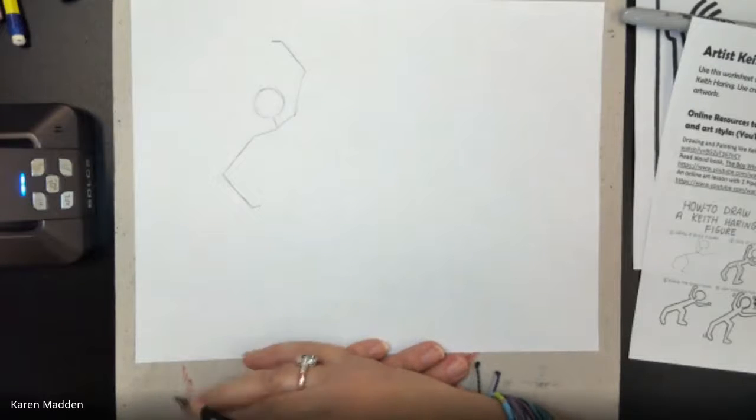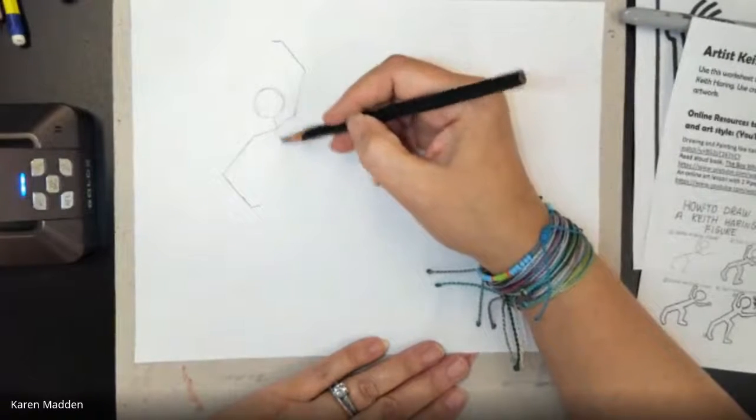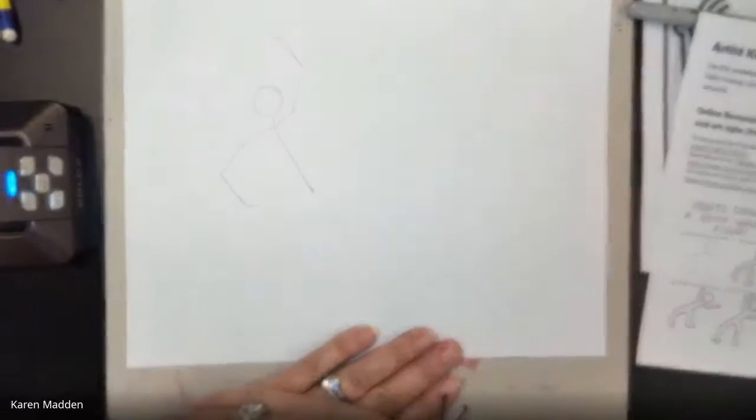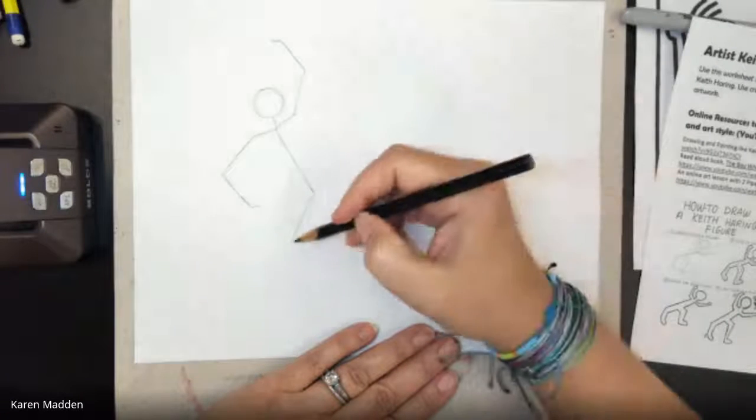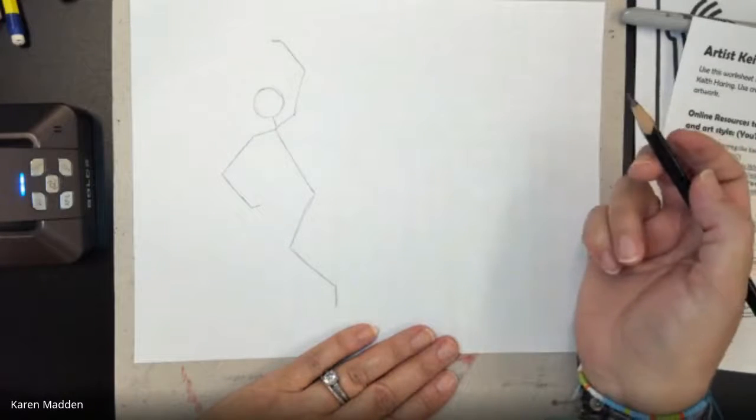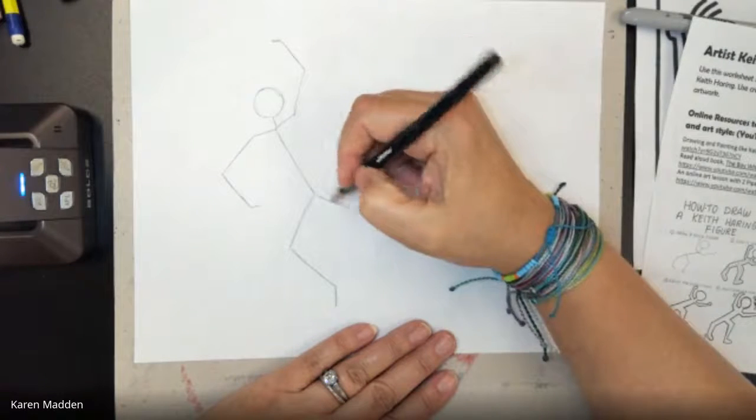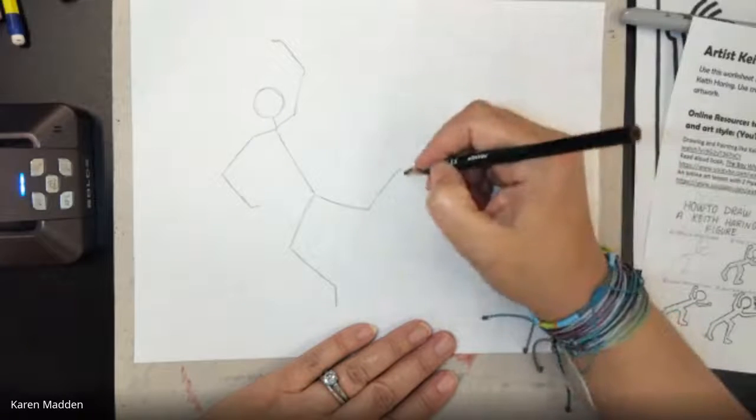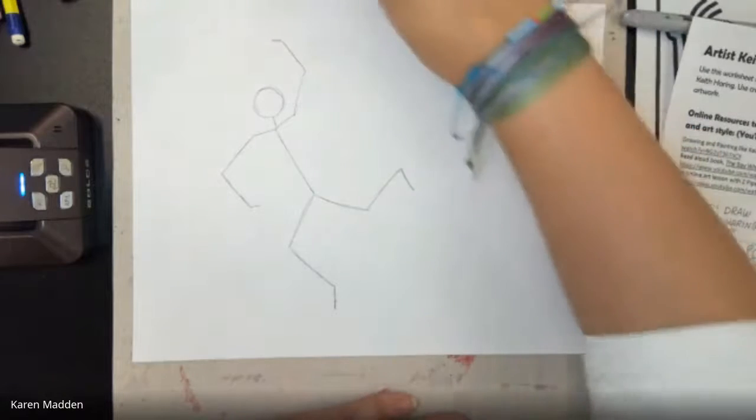So now I want to draw the torso or the upper body. I think I'm going to have this person, this upper body kind of going like this. Maybe a little bit longer. And then I want to draw the leg. This is the lower part of the leg. And the foot. Now I'm going to draw this part of the leg. Lower part of the leg. And the foot. Again, that is a basic stick figure.